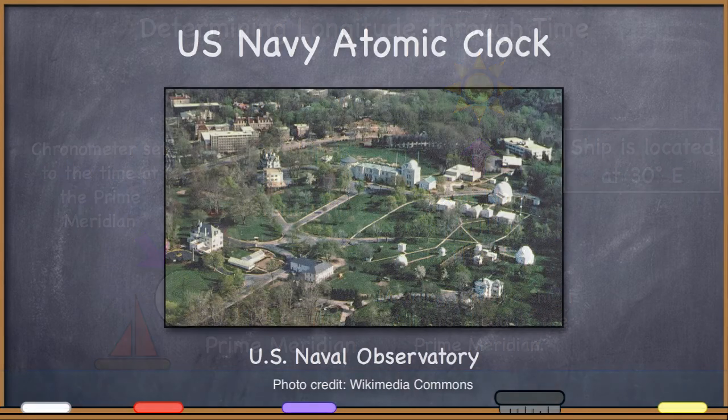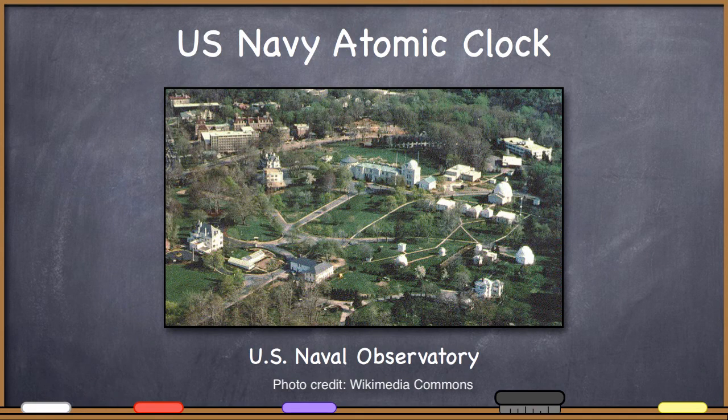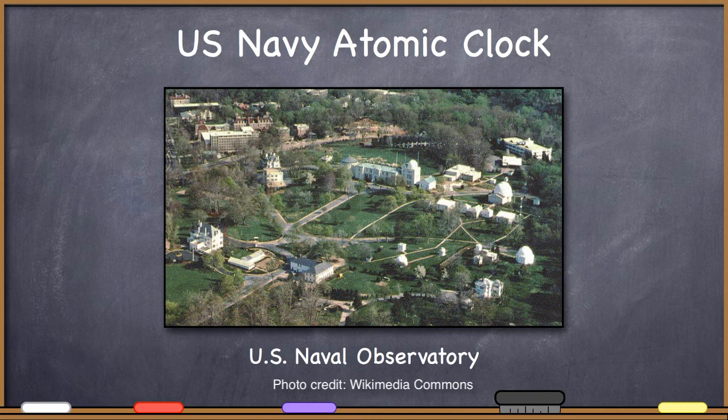If you take a look here, this is the U.S. Naval Observatory. The United States Navy is the one that maintains the highly, highly accurate atomic clock for the United States. Well, why in the world is the U.S. Navy so interested in knowing so precisely what time it is? Why would they be the ones who run a clock that is so highly accurate? Well, it's not because they're afraid they're going to be a microsecond late for something.